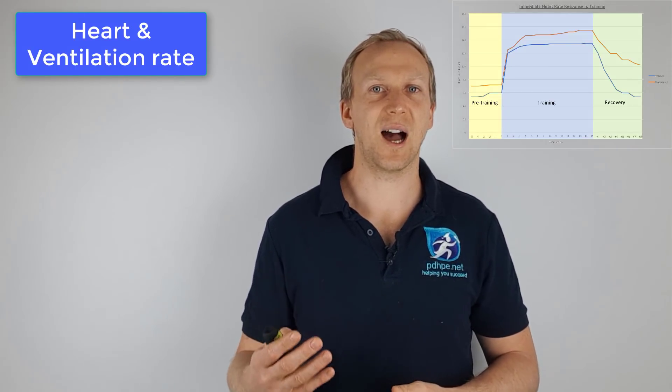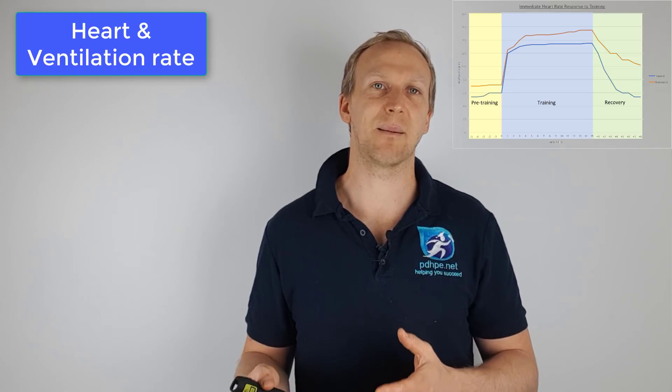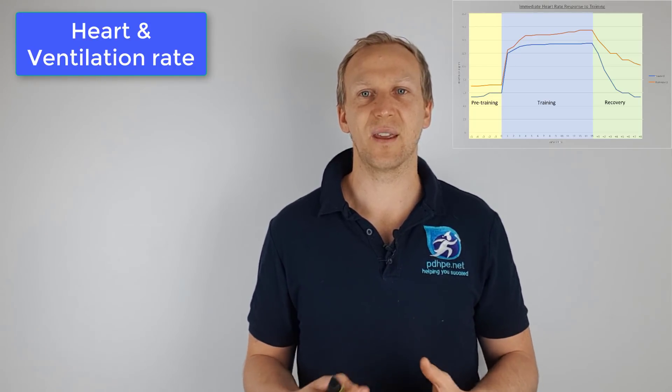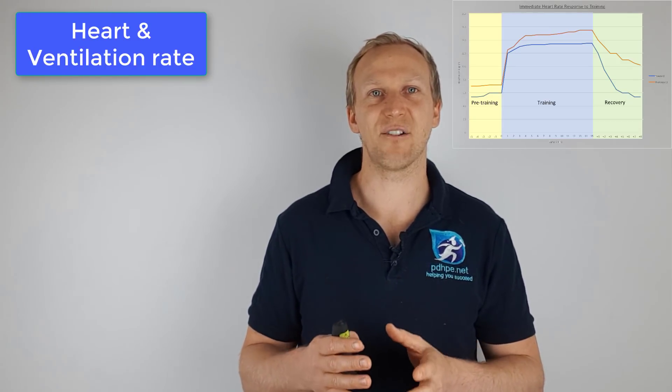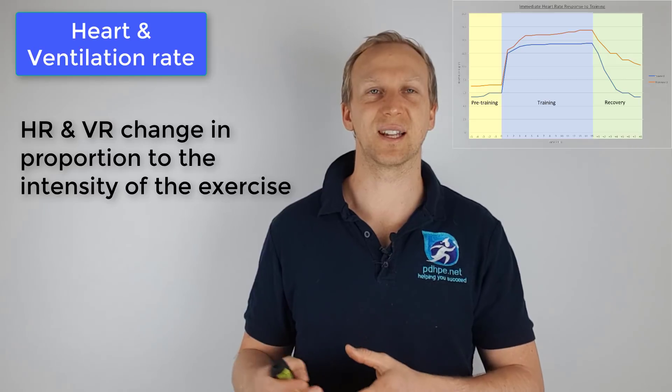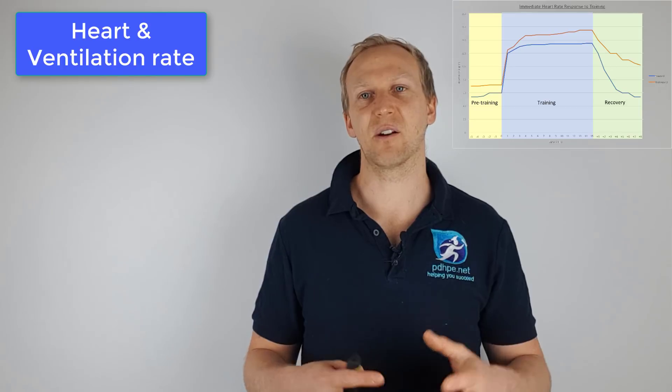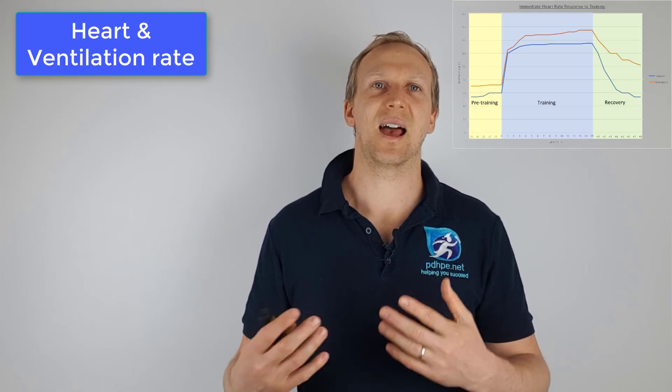Throughout the exercise, heart rate and ventilation rate increase as a result of the increase in carbon dioxide in the blood. Carbon dioxide levels in the blood are directly proportional to the intensity of exercise and amount of oxygen being used, so heart rate and ventilation rate change in proportion to exercise intensity. When physical activity stops, it takes a while for carbon dioxide levels to return to resting levels, so heart rate and ventilation rate also take time to decrease. Essentially, both are about getting rid of carbon dioxide and delivering more oxygen to the muscles.